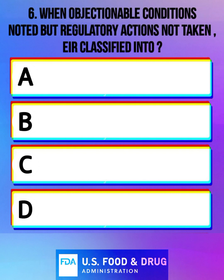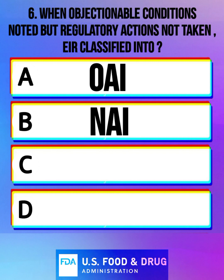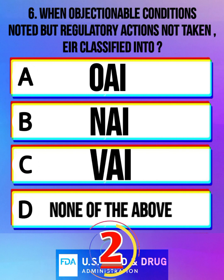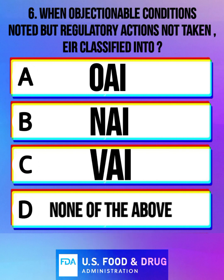When objectionable conditions are noted but regulatory actions are not taken, then the EIR is classified into: Option A: OAI. Option B: NAI. Option C: VAI. Option D: none of the above. And the correct answer is VAI — voluntary action indicated.